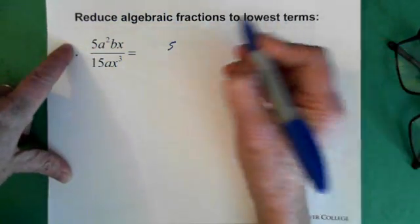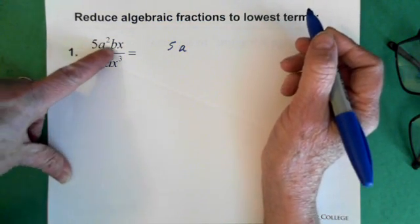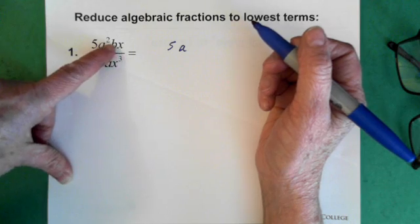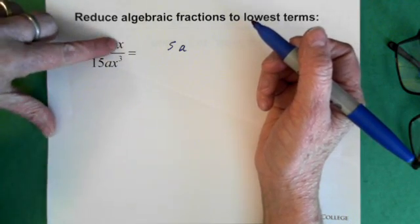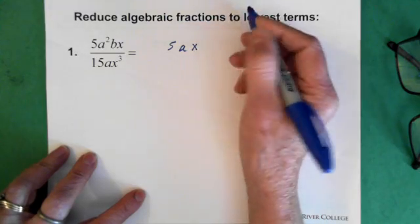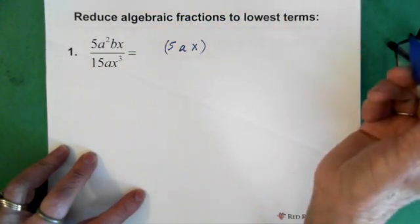And in the numerator and denominator, we have an a. And we don't have a b top and bottom, so we can't put a b there. But we do have an x top and bottom. So we can factor out an 5ax top and bottom.